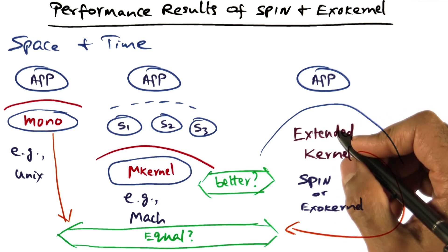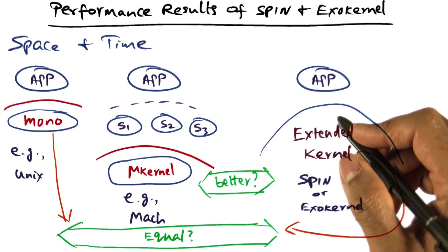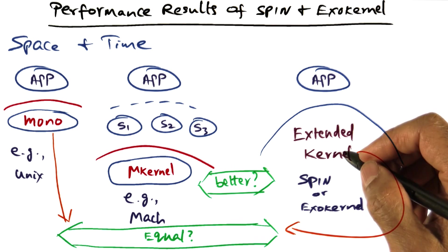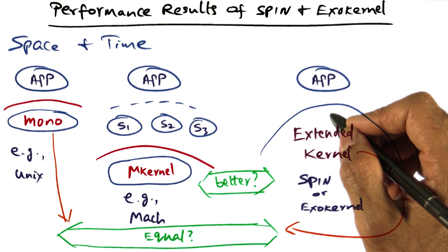I encourage you to read the performance results in the papers. Key takeaway that you will see when you read the performance results reported by both spin and exokernel is that they do much better than Mach microkernel for protected procedure call.